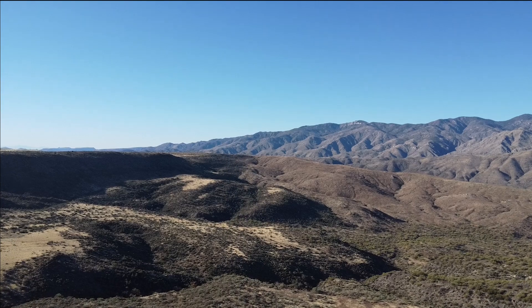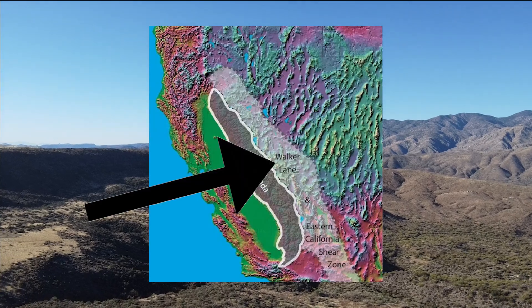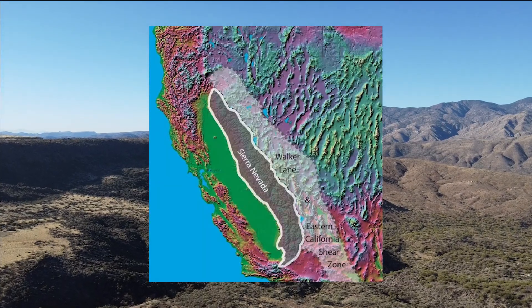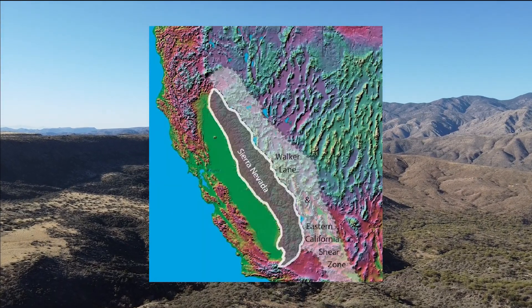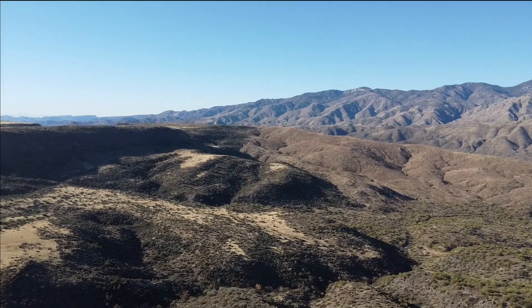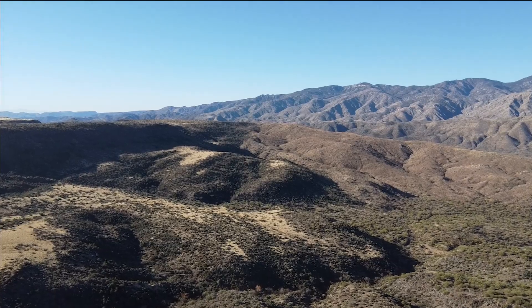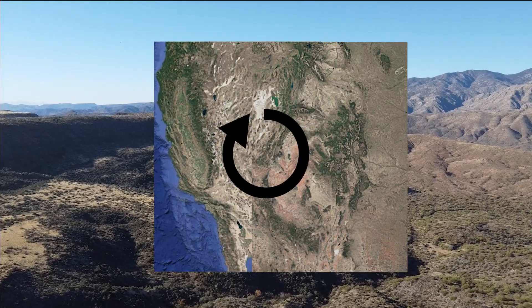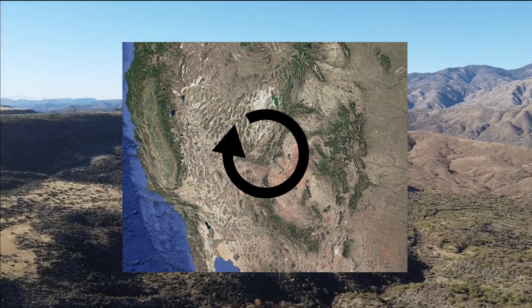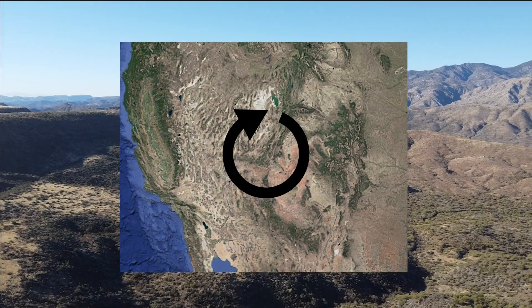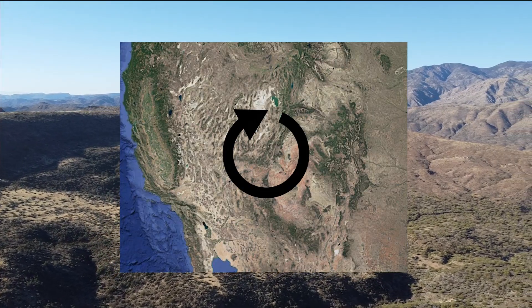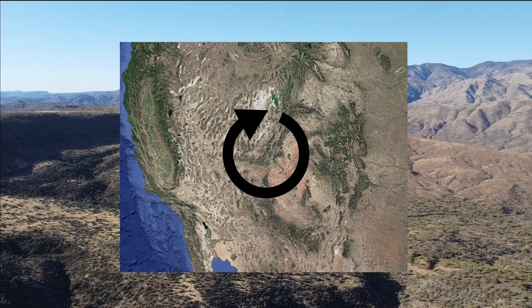This movement caused other faults like the Walker Lane to form further inland to compensate for the dragging movement on the seams of the North American plate. These faults create a rotational effect that causes extension of parts of the southwest to compensate for these intense transform forces.